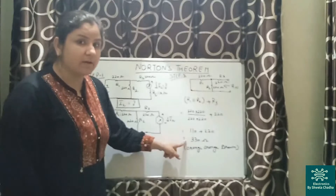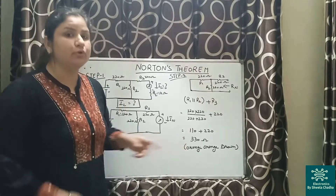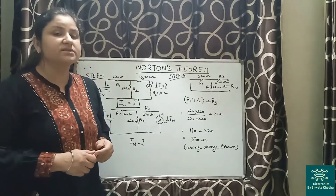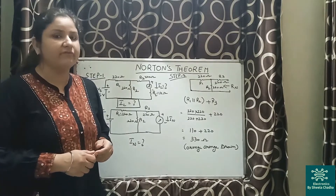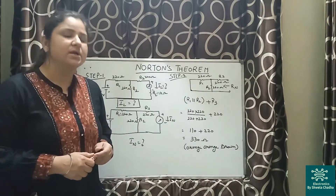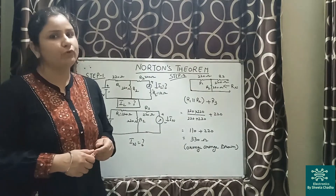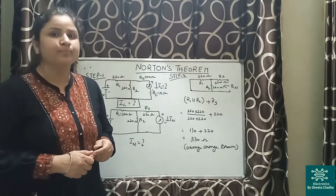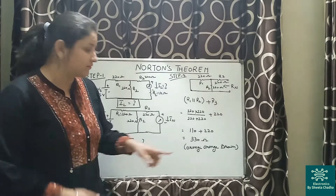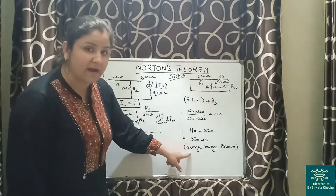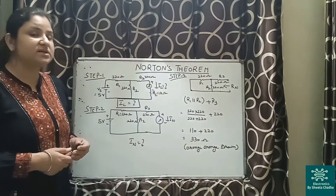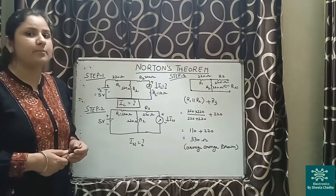So the parallel combination of R1 and R2 comes out to be 110 ohms, and adding R3 in series gives 110 plus 220, so finally Rn comes out to be equal to 330 ohms. As per the color coding, the resistance will have orange, orange, and brown for the first three bands, and the fourth band can be gold, silver, or no color for tolerance.